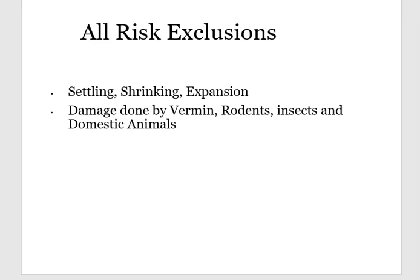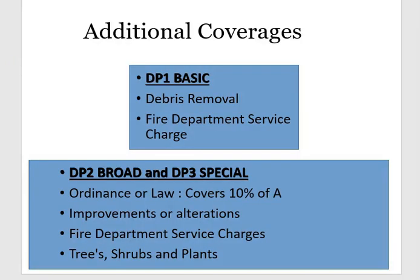Next we'll go over additional coverages — coverages that are covered in addition to what's in the insuring agreement. These are coverages that are also going to be covered under the policy. For a DP1 basic policy, the additional coverages include debris removal and fire department service charges. Debris removal applies when there's damage to the dwelling and they have to remove debris before repairs begin. You don't pay extra for it — it's additional coverage, not a peril covered in the policy, but covered in addition.